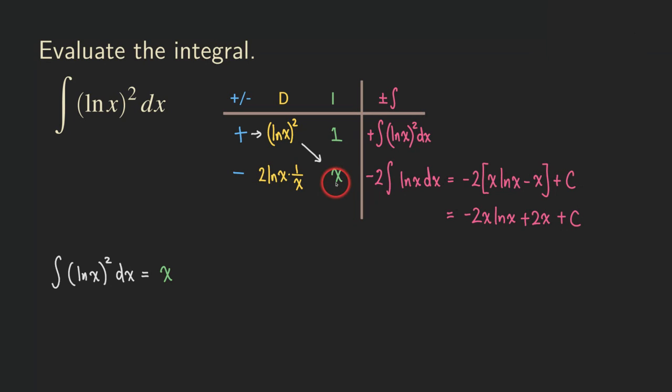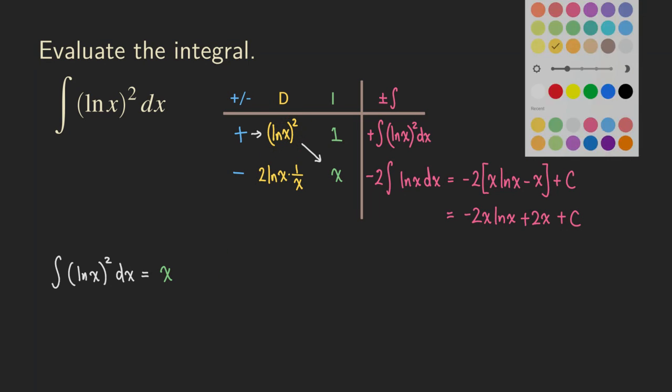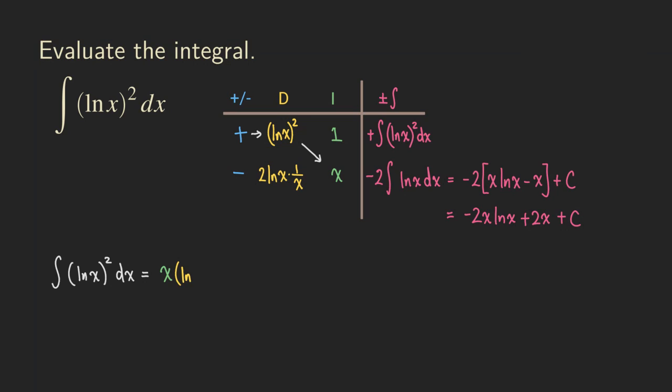Which is this x right here. And then this ln of x squared. So we are having that.